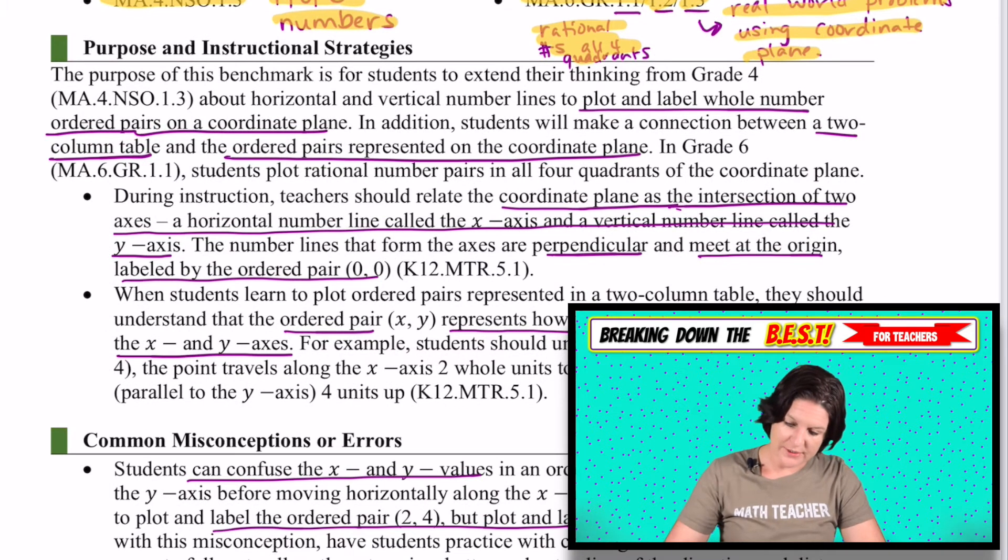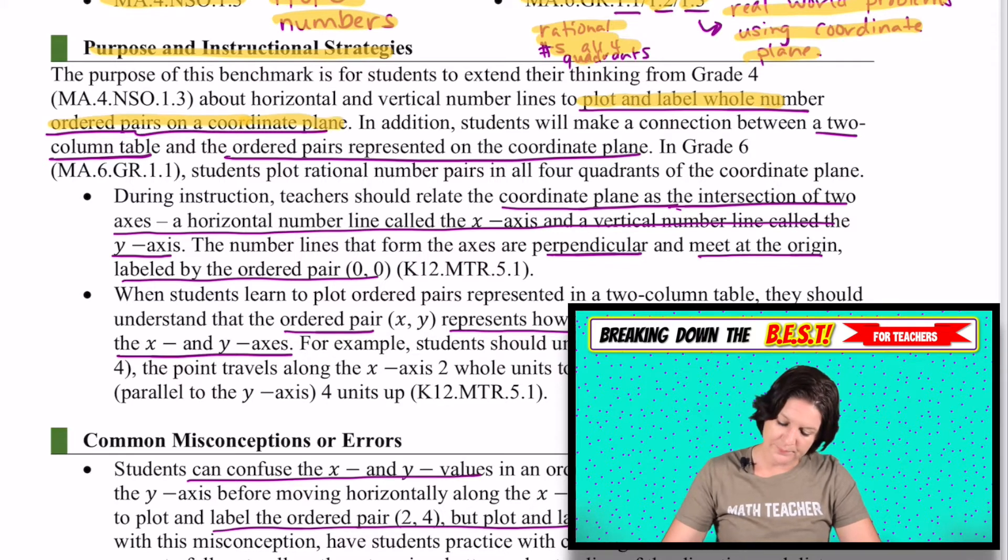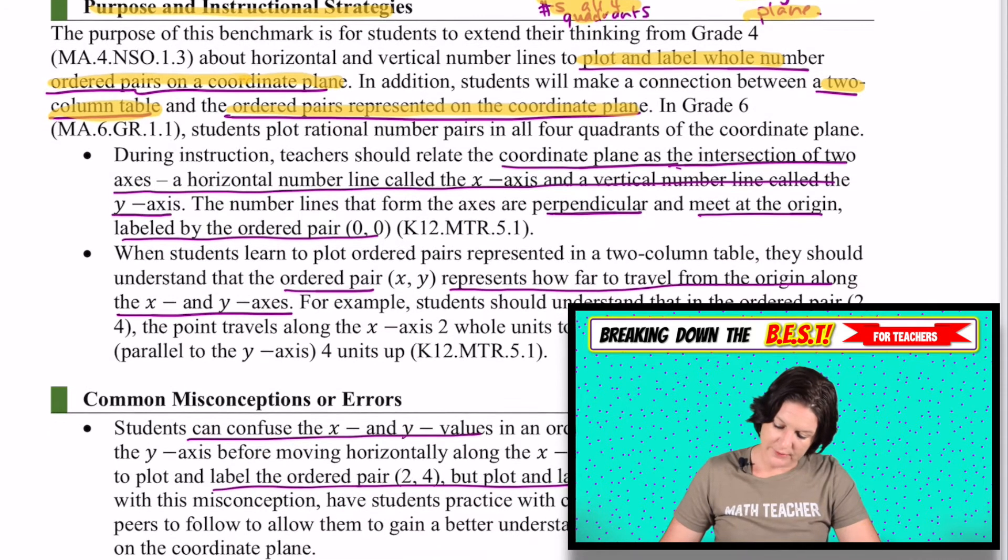The next part is the purpose and instructional strategy section. Let's see what jumped out at me. So it says here, we're plotting. We need to be able to plot and label whole number ordered pairs on the coordinate plane. I'm using that two column table. I'll show you an example of that.